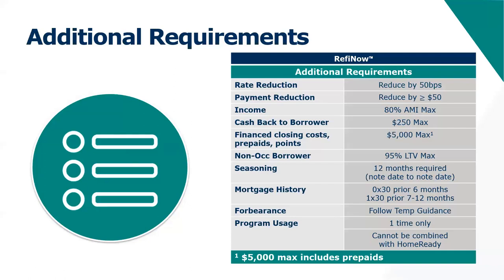The rate has to be reduced by 50 basis points and payment reduced by $50. The income cannot exceed 80% AMI. Cash back to borrower is limited to $250 — this is a big one. Your regular rate/term refi option allowing two percent or $2,000 or $2,500 does not apply here; max cash back is $250. Additionally, financed closing costs, prepaids, and points cannot exceed $5,000. The borrower can bring money to closing, but to finance those costs into the loan, you can only go up to $5,000.